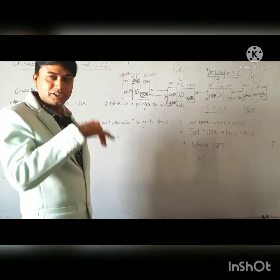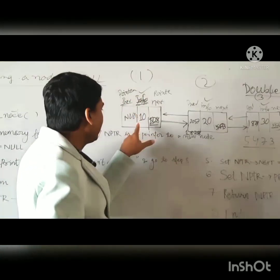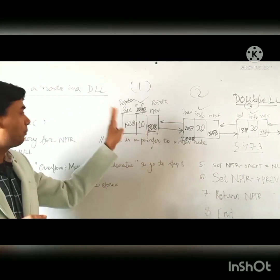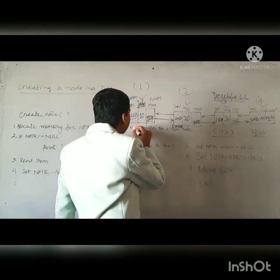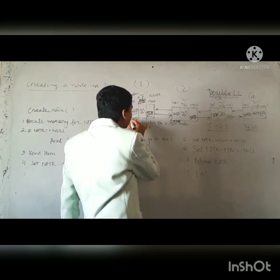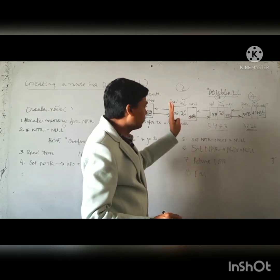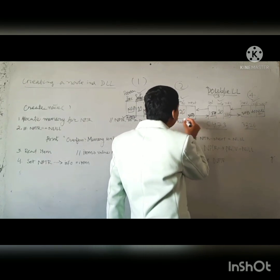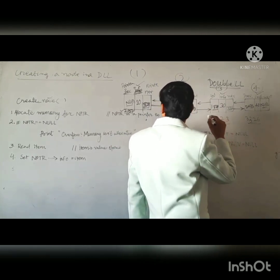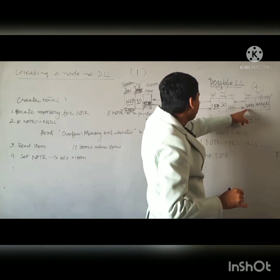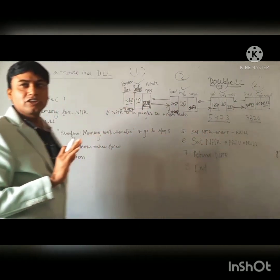Now we will come to the reverse process. Every node has a previous pointer. Since the first node is the first node, it is not pointing to any other node to the previous — there is no previous node, so it is NULL. But the second node has a previous pointer with address 2057, pointing to the previous node. Similarly, 1829 is pointing to its previous node, and 5473 is pointing to its previous node. These are the basic structures of a double linked list.